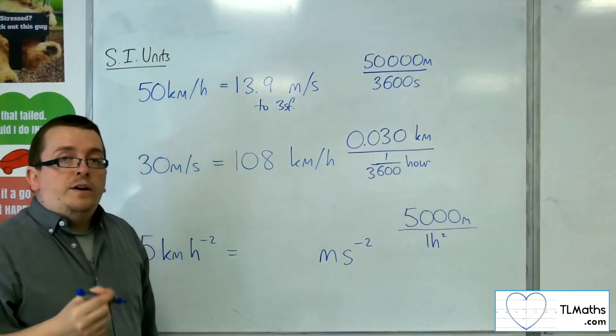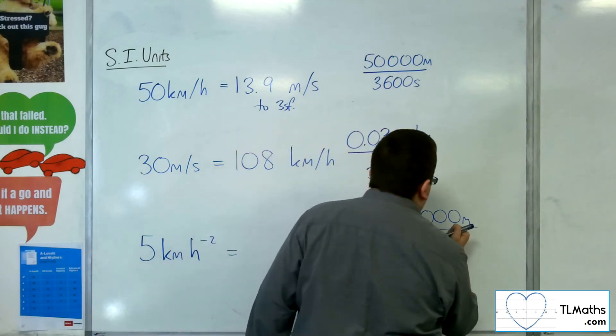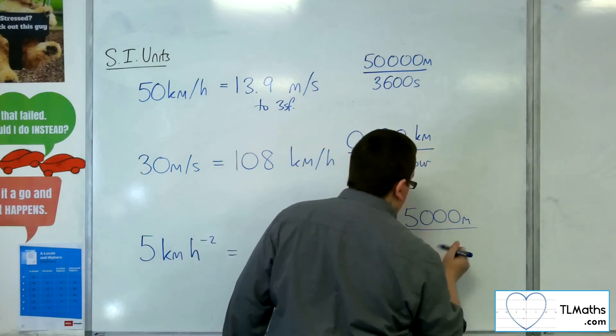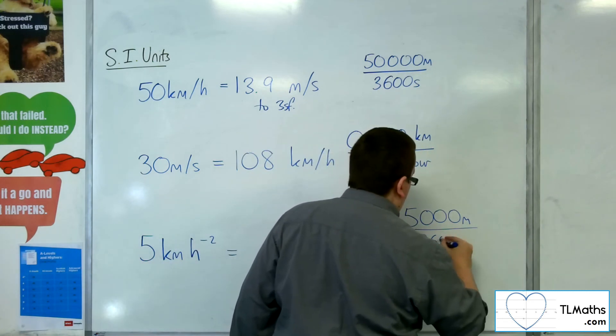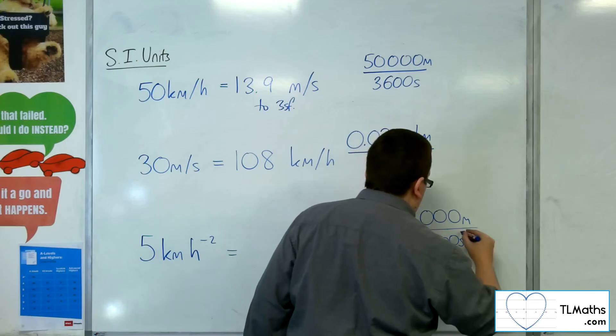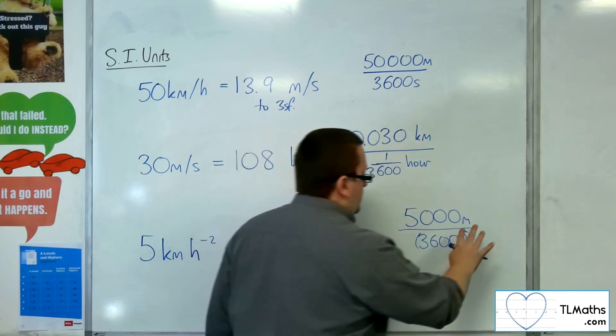Now, one hour, I know, is 60 minutes, which is 3,600 seconds. So that's 3,600 seconds, and it's squared.